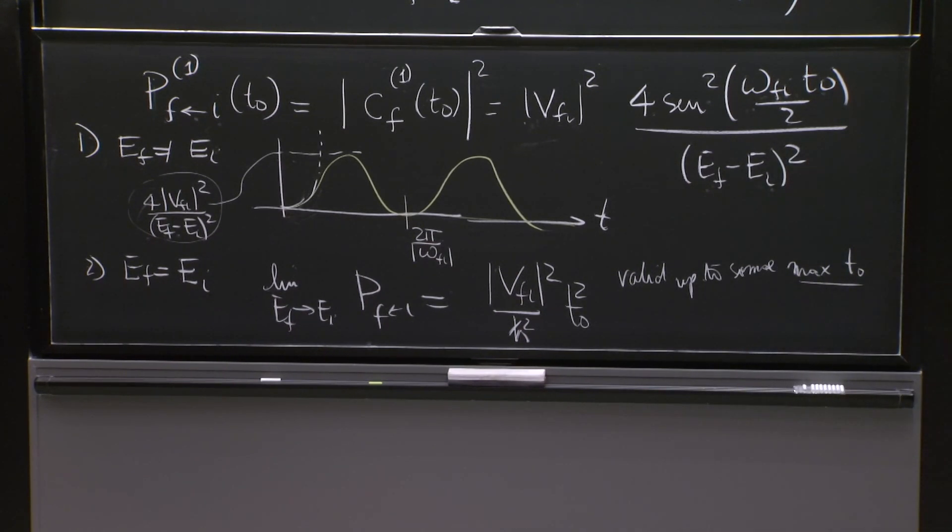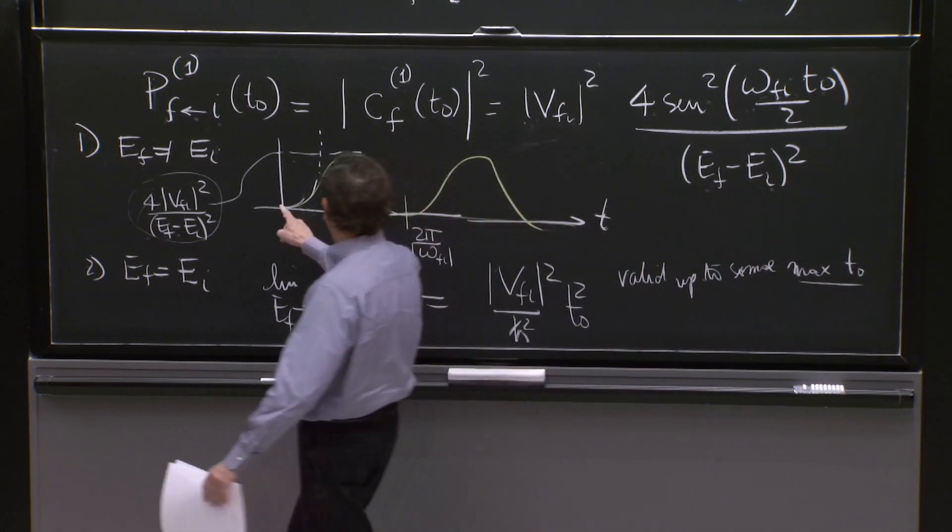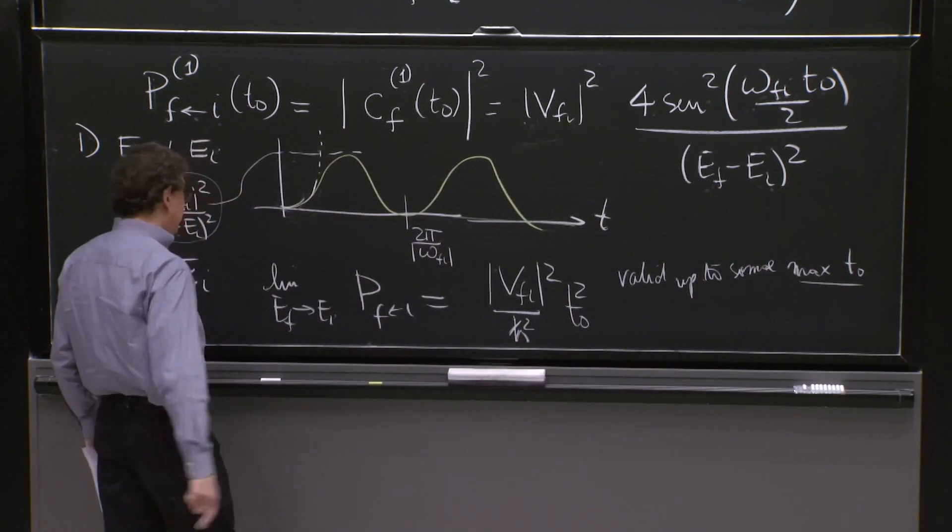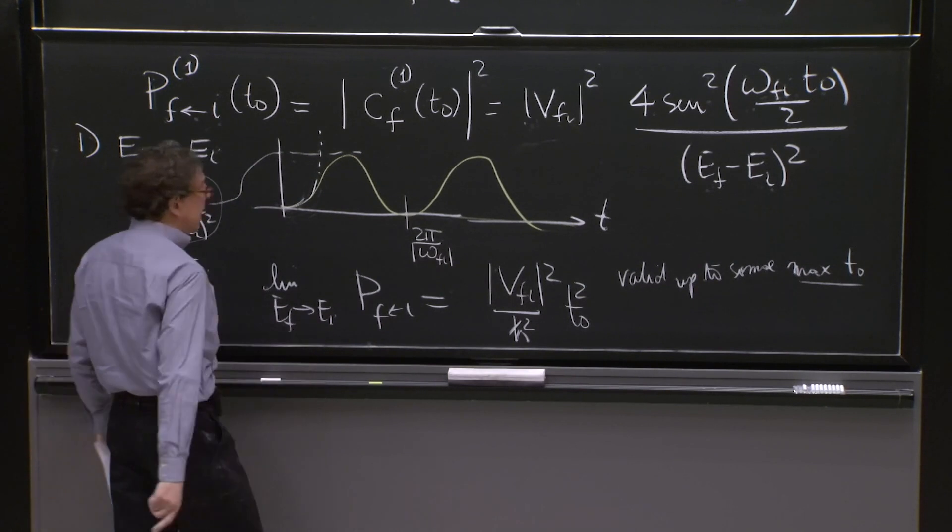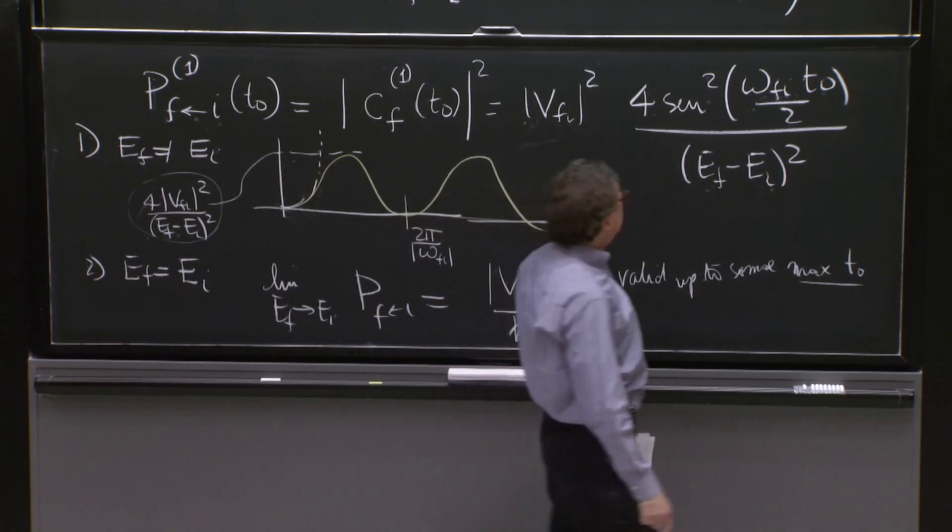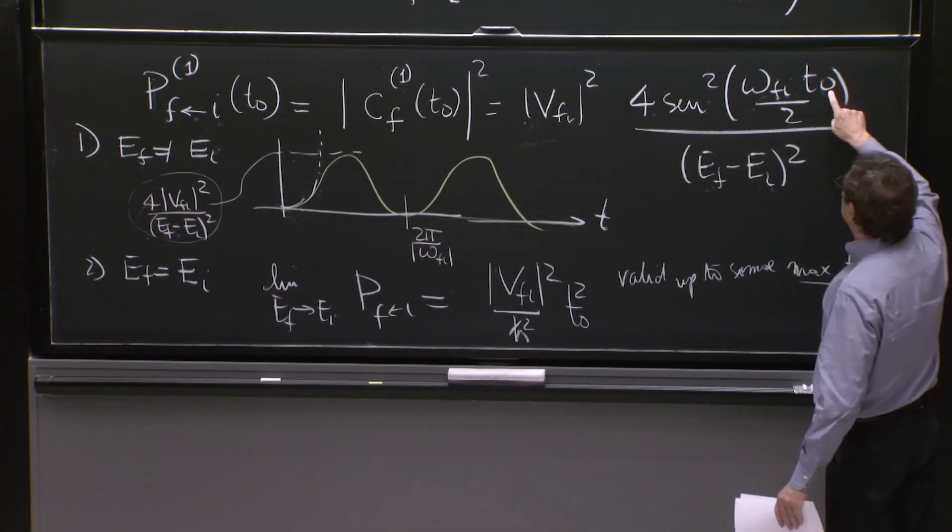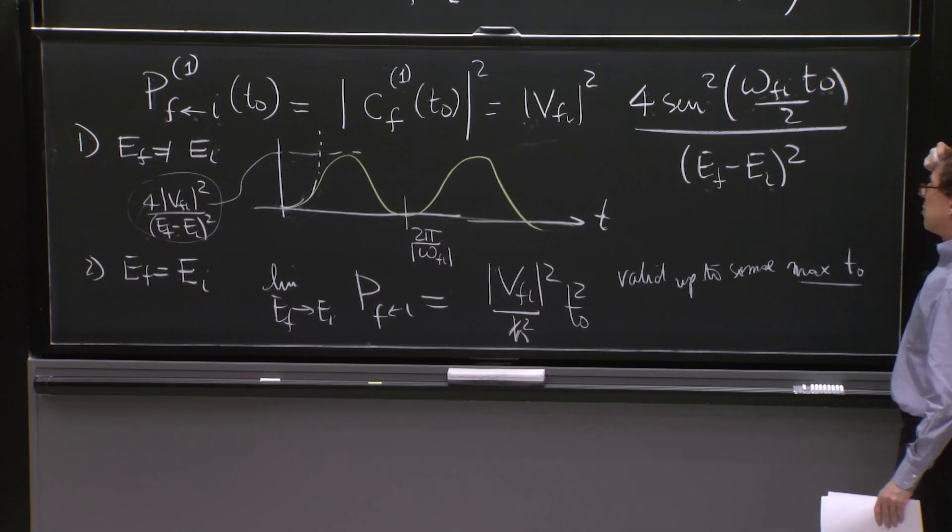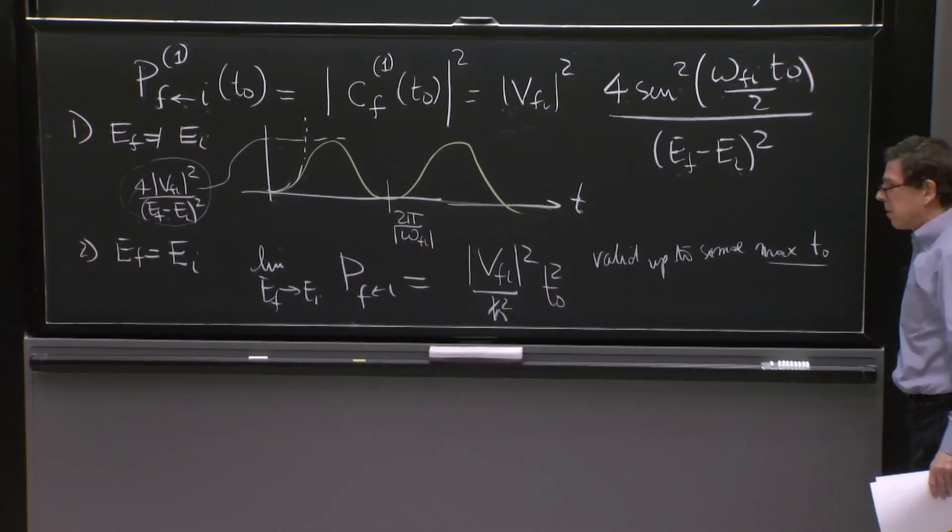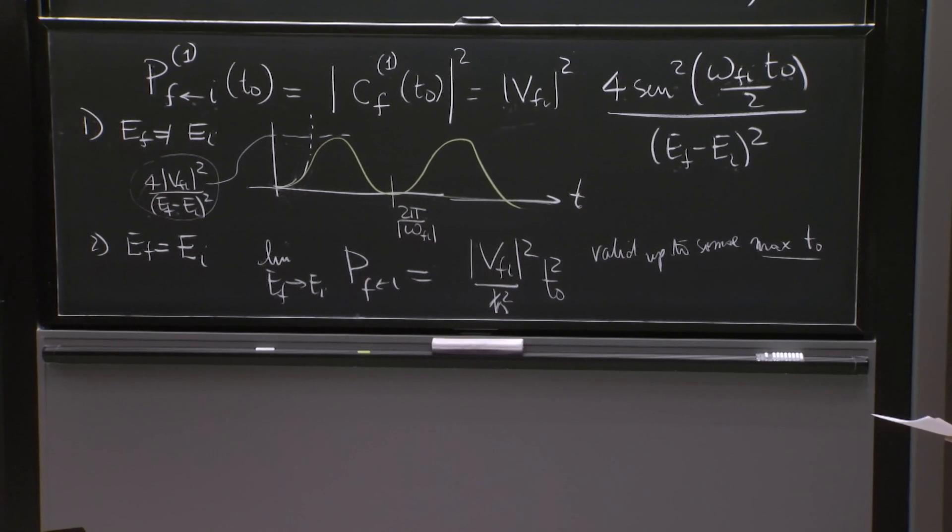So this is valid for up to some max t0. And it's up to you. Depends on what vFi is, how long you can trust this. So this is a growth. This is the same growth you observe here. The limit as EF goes to EI, goes to 0. It's actually the same as the limit as t goes to 0. So it's the same quadratic behavior.